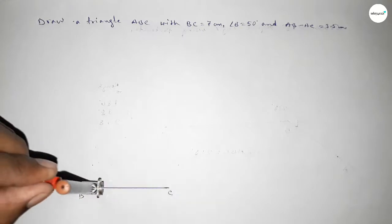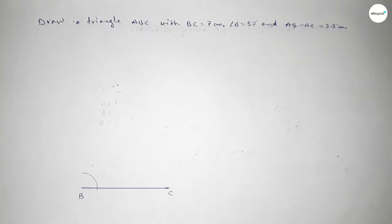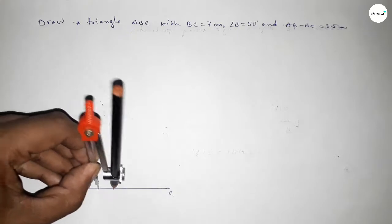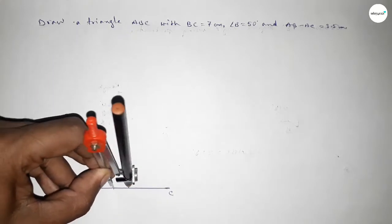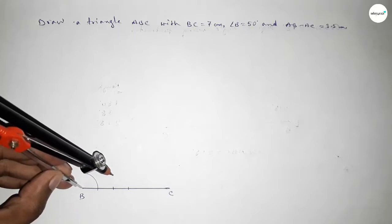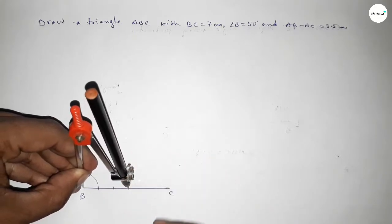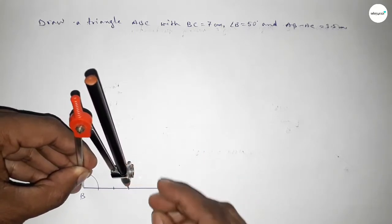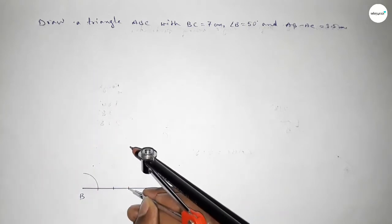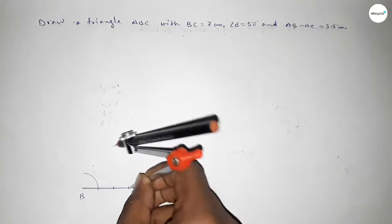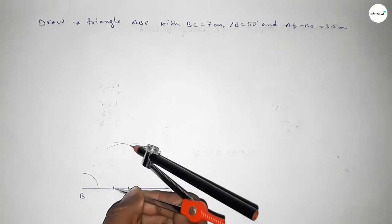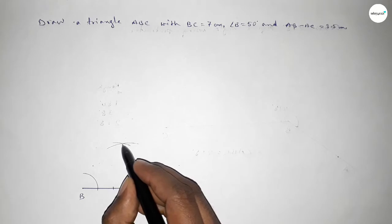Putting the compass on point B, taking any length, and drawing an arc. With the same length, putting the compass on that arc and cutting again. With the same length, putting the compass on the new point and cutting again. Then taking the length from B to that point, putting the compass first here and drawing an arc, then with the same length cutting again.